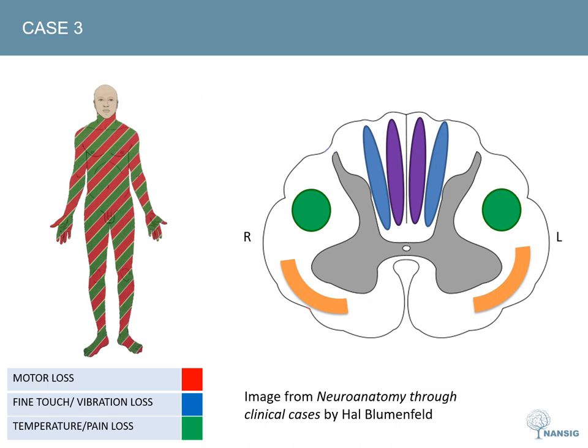Case three shows bilateral motor and sensory involvement suggesting a cord lesion. Pain and temperature are lost throughout the body but sparing the face, explained by a lesion to both spinothalamic tracts — facial sensation is mediated by the trigeminal system and would be spared by a spinal cord lesion. The patient also shows entire-body weakness sparing the face, explained by bilateral damage to the descending lateral corticospinal tracts. Although you might expect upper motor neuron signs, this patient shows a lower motor neuron picture, which can be explained by spinal shock — an acute insult to the corticospinal tracts can initially mimic a lower motor neuron lesion before converting to the classical upper motor neuron picture over days or weeks.